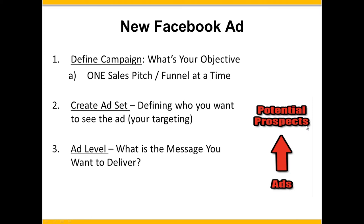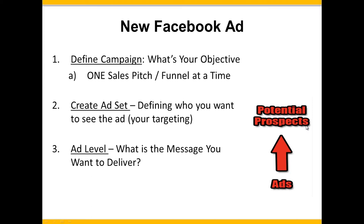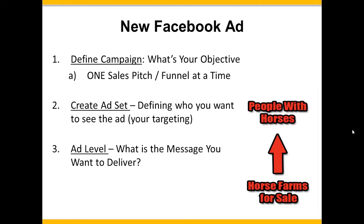Let's say that we specialize in selling horse farms and want to target that audience. First we define our campaign, which is to get people to click on our ad and go to a landing page on our site that talks about mistakes when buying horse farms or how to finance horse farms. Then we create an ad set that defines our target audience — we want to pick that audience of people who have horses. Once we've defined that likely group, we want to design an ad to resonate with them so they'll click on it.